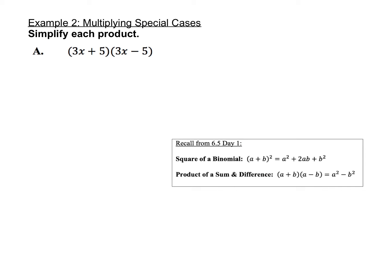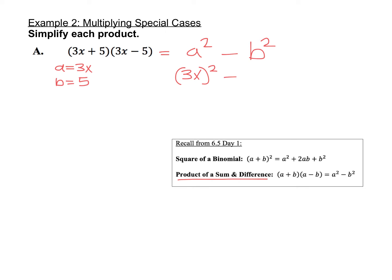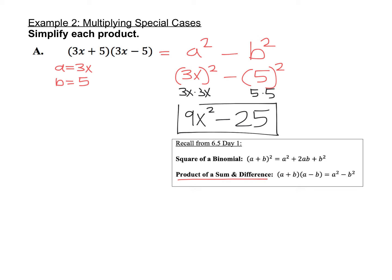Now let's move on to a couple of special cases. We originally talked about these in 6.5 Day 1. The expression (3x + 5)(3x − 5) is an example of a product of a sum and a difference — everything is the same between the two binomials, but one has a plus sign and one has a minus sign. This follows the pattern a plus b times a minus b. Here a is 3x and b is 5. Using the shortcut formula, we get a squared minus b squared: 3x squared minus 5 squared, which is 9x squared minus 25.